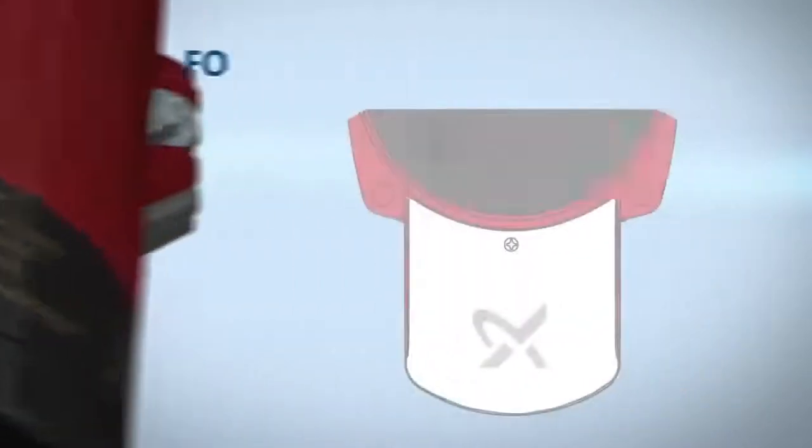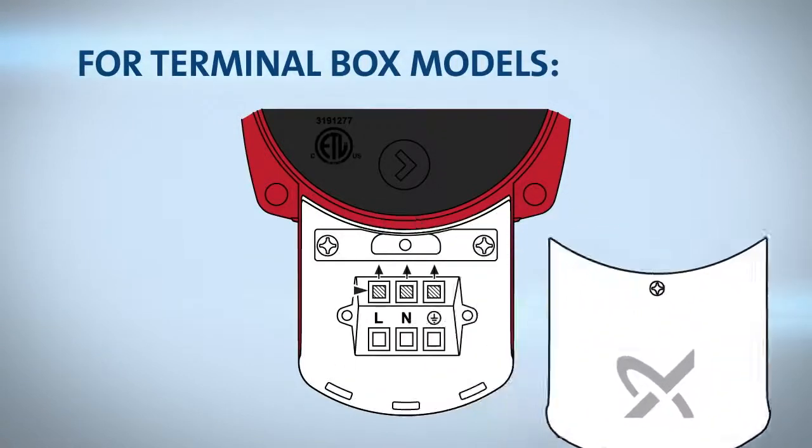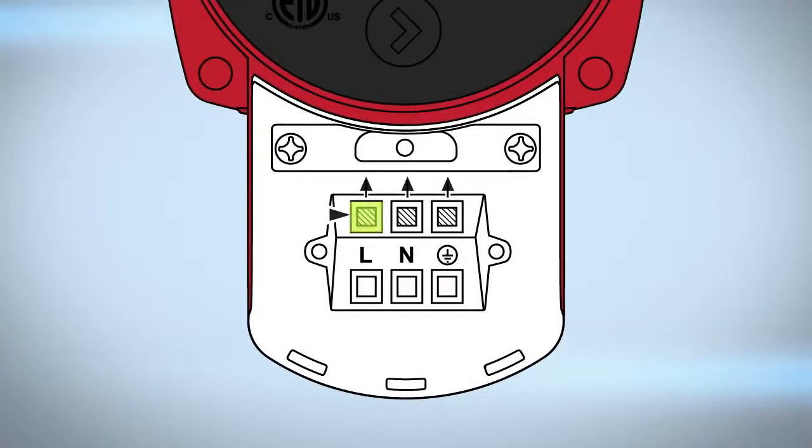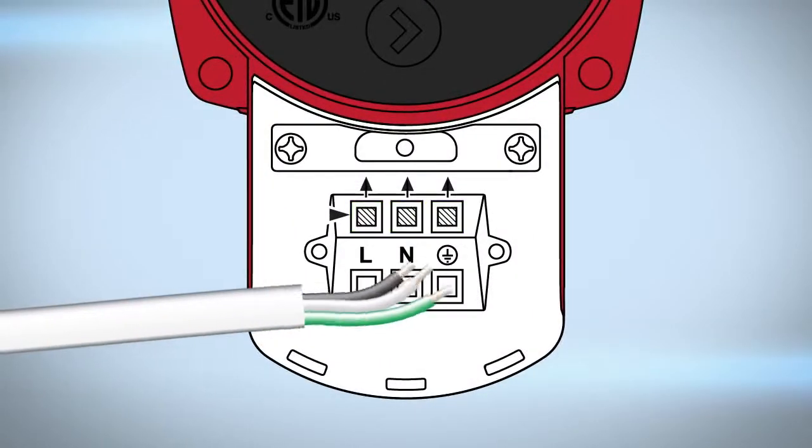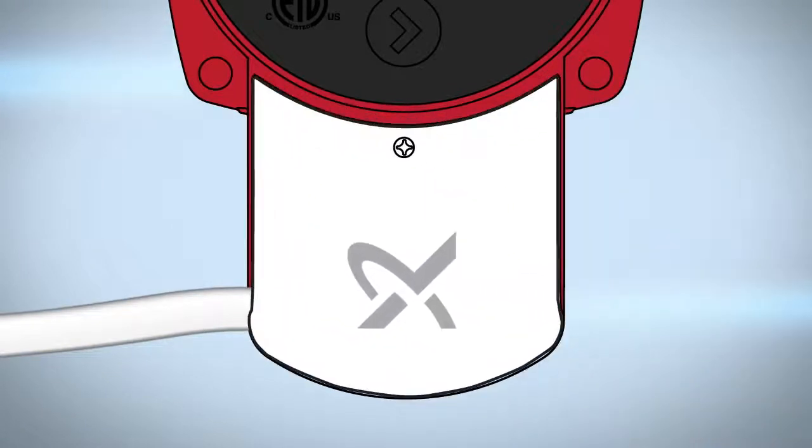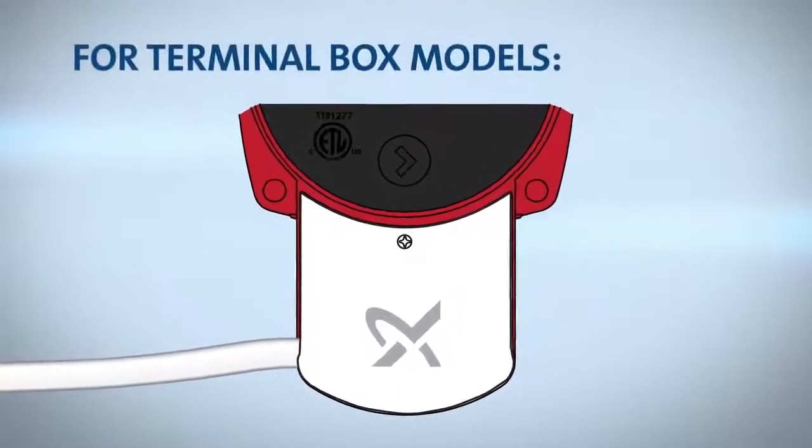For terminal box models, loosen the terminal box screw from the terminal box cover and use the conduit port as a wiring entrance. Gently push open wiring terminal levers for wiring installation. Once wires are connected, slide the terminal box cover over the terminal box body and tighten the screw to secure.